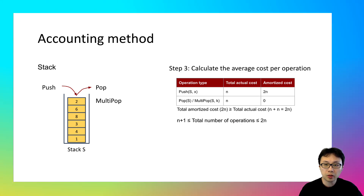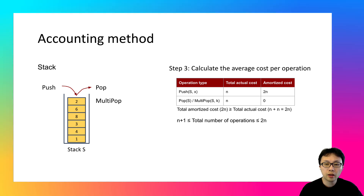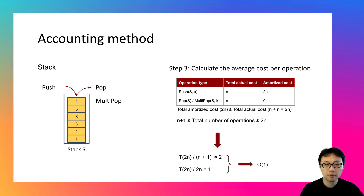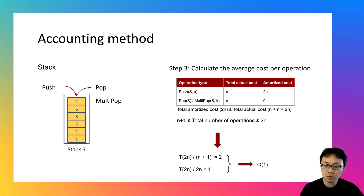The last step, step 3, is calculating the average cost per operation. Divide the total amortized cost by the number of operations. Given n elements being added and removed, you need at least n+1 operations — imagine n pushes and one multipop removing everything. The maximum is 2n operations — imagine n pushes and n pops. Regardless of which extreme scenario, the time complexity per operation is always O(1), because both cases lead to a constant number of steps per operation. Using the accounting method, we verify that the cost per stack operation is constant, despite multipop sometimes being expensive.